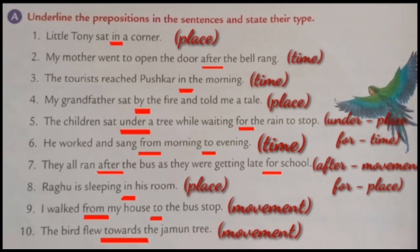Fourth one: My grandfather sat by the fire and told me a tale. Here, the answer is 'by' — preposition of place. Fifth one: The children sat under a tree while waiting for the rain to stop. Here, the answers are 'under' and 'for'. 'Under' is a preposition of place and 'for' is a preposition of time.